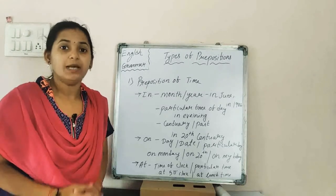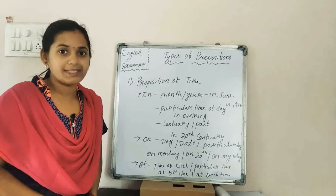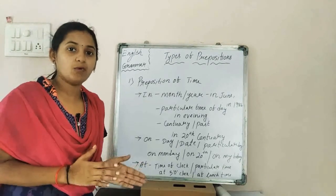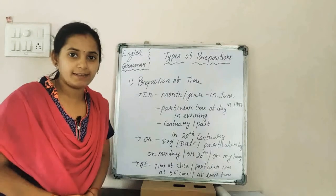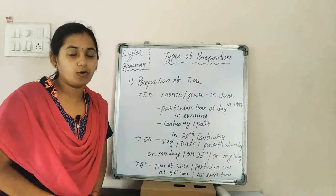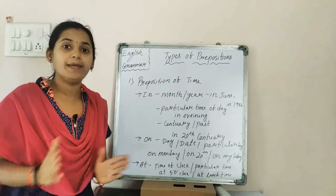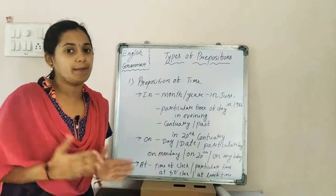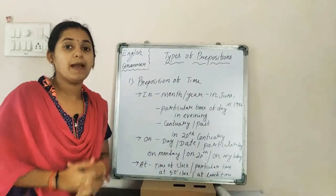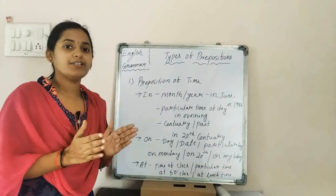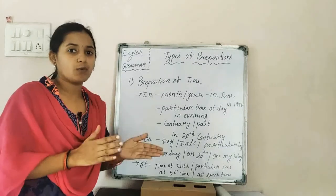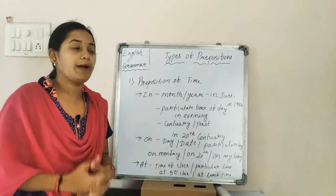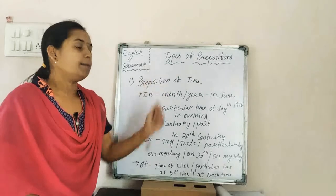So what are prepositions? Prepositions are the words that relate a noun with other words in the sentence. The other word may be a noun, an adverb, an adjective, or a verb — anything. The relation between the noun and the other words in the sentence is shown by prepositions.